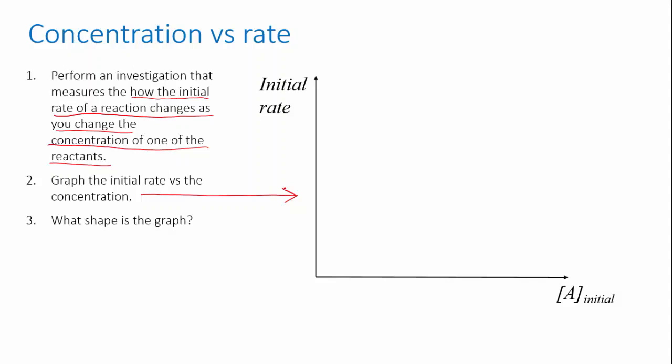For instance, if there's a linear relationship between the rate and the concentration, this means that the rate is directly proportional to the concentration of that reactant, and we call that a first order dependence. We say that the reaction is first order with respect to A.